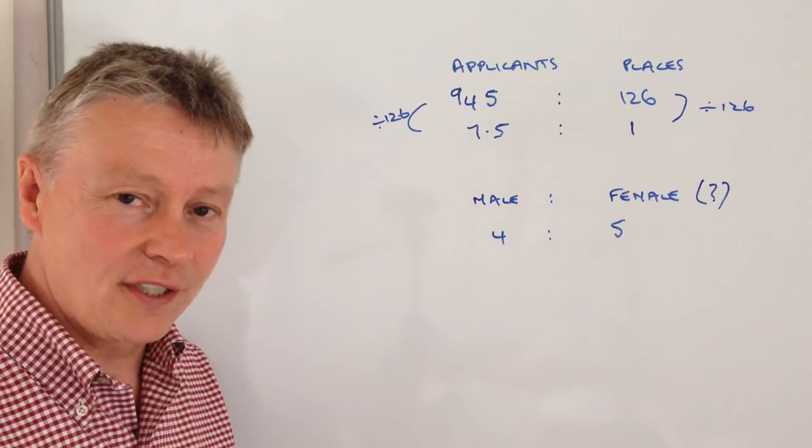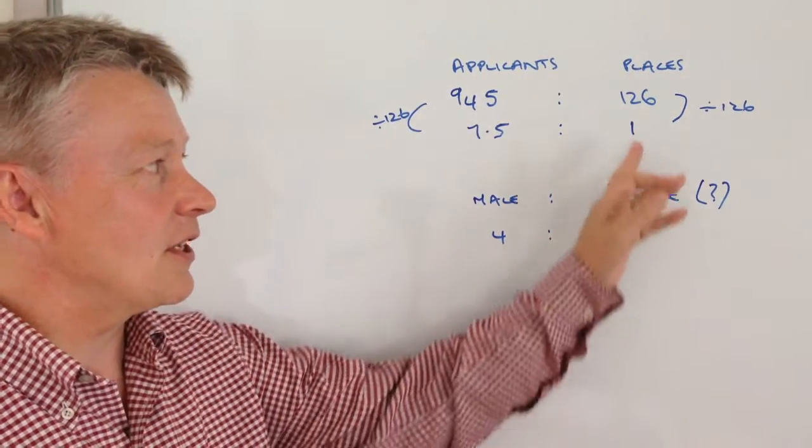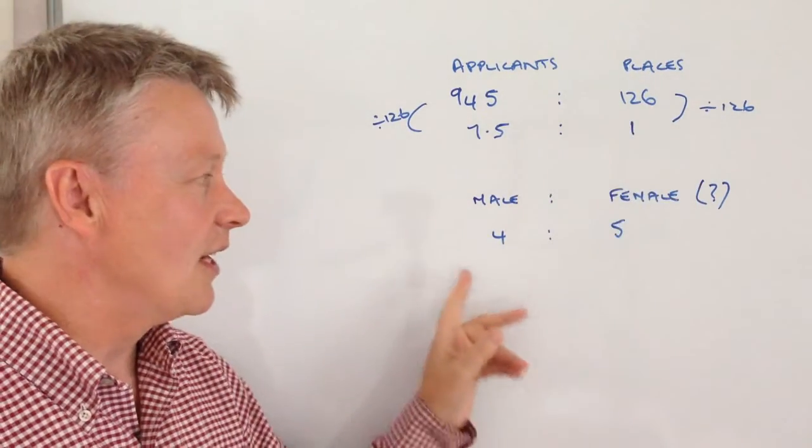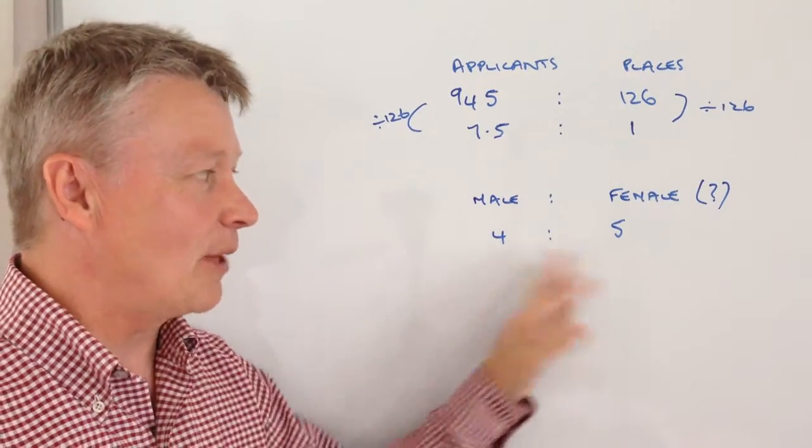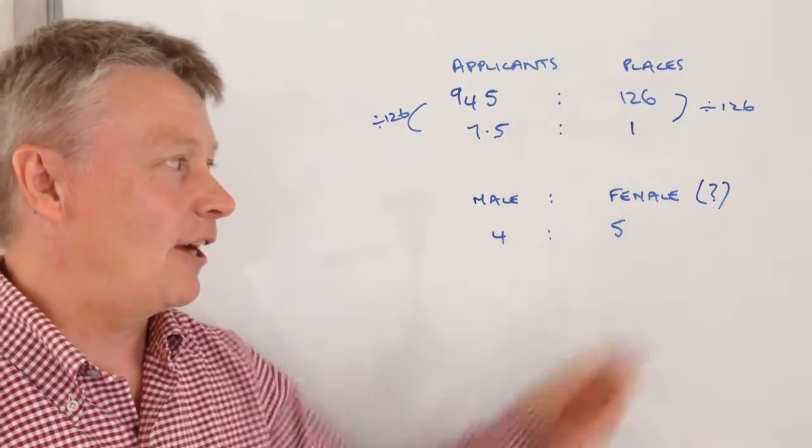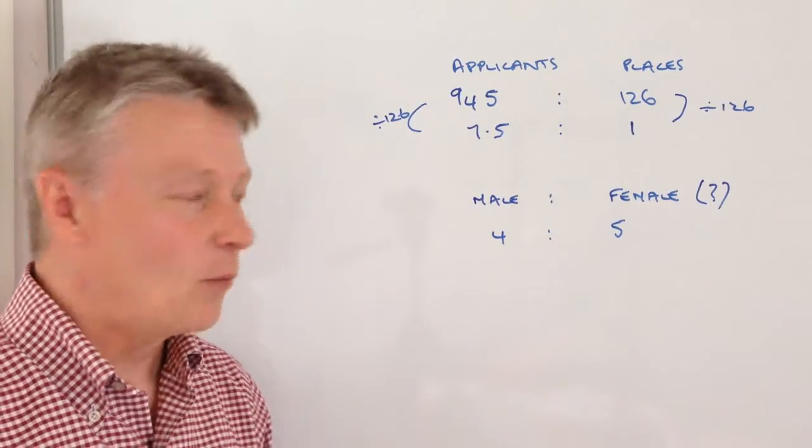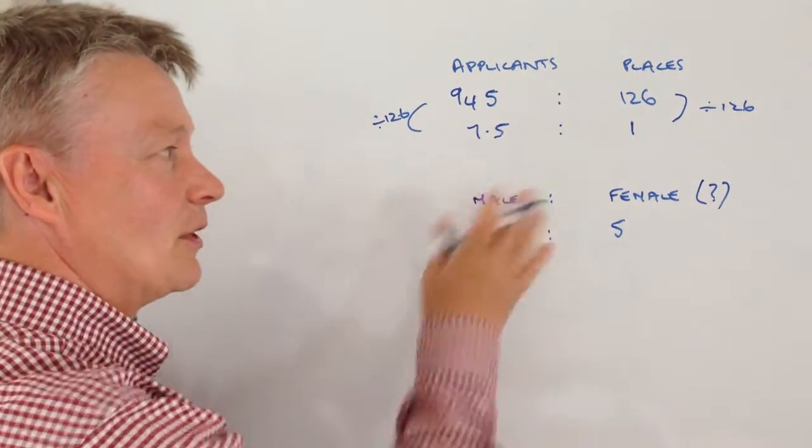The second part of the question says that out of the 126 successful applicants, the ratio of male to female is 4 to 5, and it asks you to find out how many females there are. Well, we treat that in much the same way.